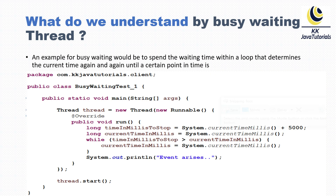An example of busy waiting could be to spend the waiting time within a loop that determines the current time again and again until a certain point in time is reached. Here I have created a thread using an anonymous approach, and within the run method I have initially noted the time in milliseconds to stop.